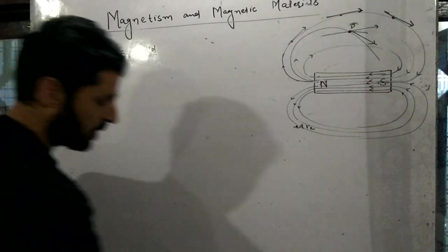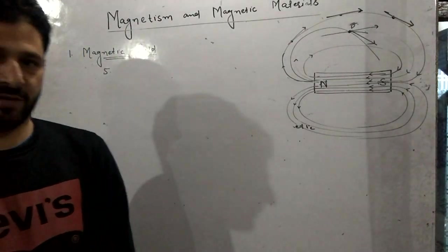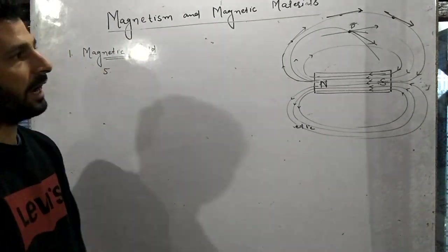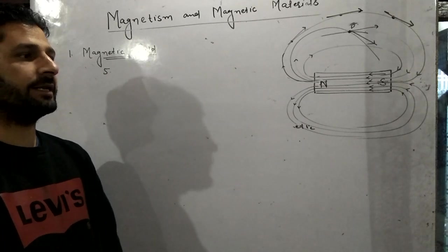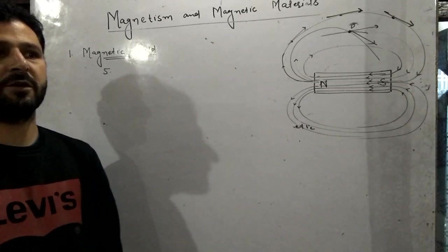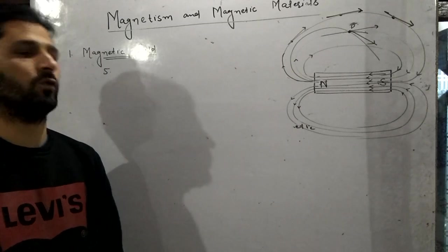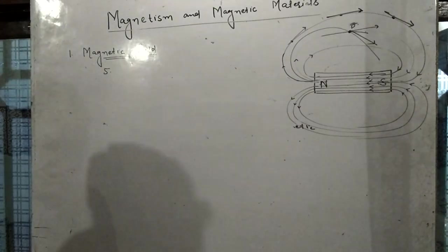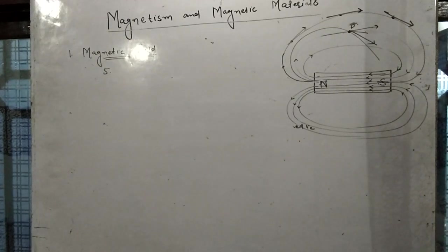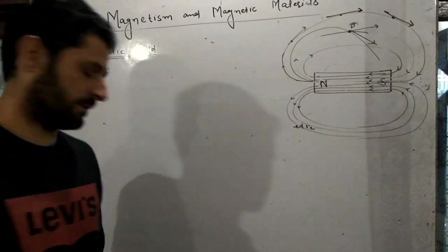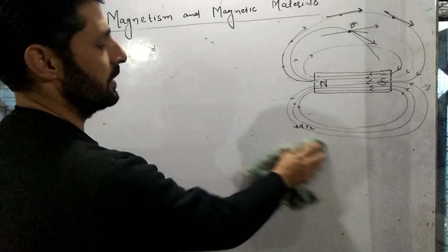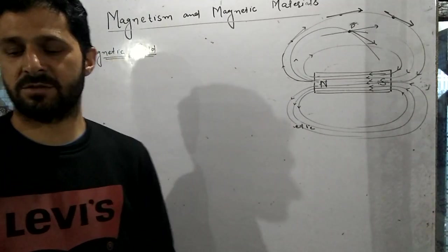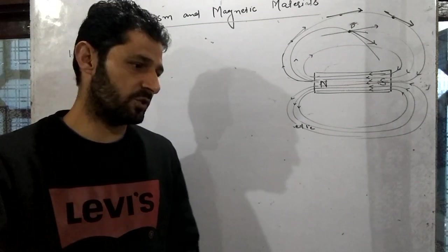The sixth property: magnetic field lines cannot pass through a diamagnetic substance. These were the properties of magnetic field lines. We will discuss the magnetic analogy between magnetic force and electrostatic force in the next lecture, as continuing here would make this lecture too long. Thank you.